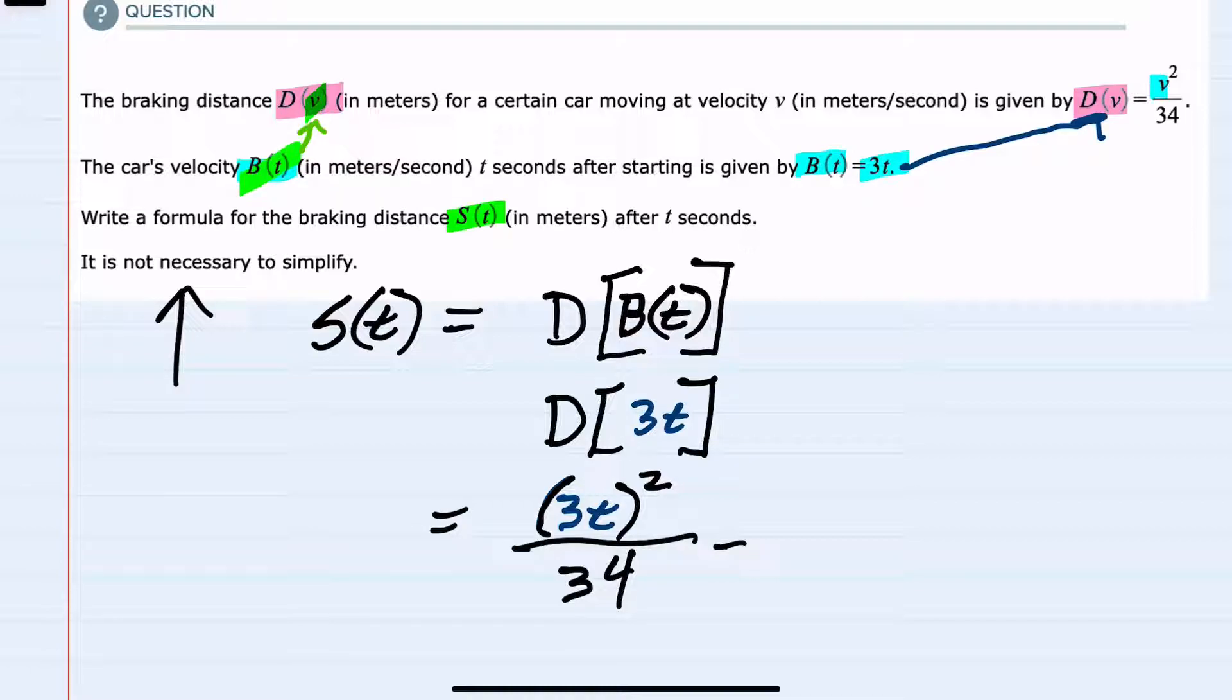But since this is easy to simplify at least a little bit, since the 3 is being squared, that would be 9. And then t squared would just be t squared over 34. So this is our breaking distance, s of t, after t seconds.